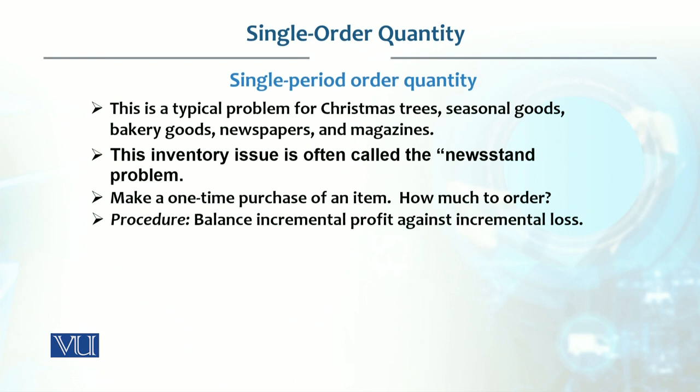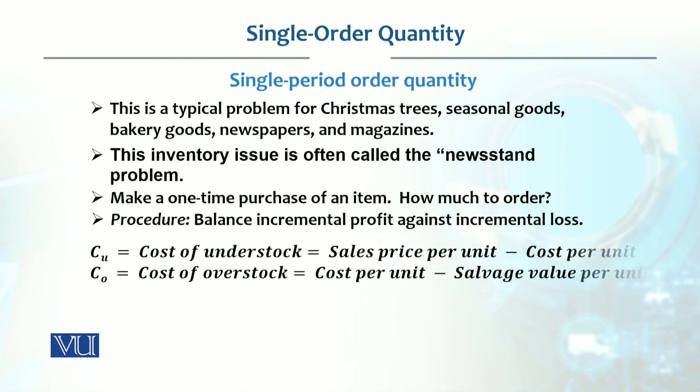Basically, the procedure involves two types of costs. One is what we call the cost of understock (Cu), which is based on incremental profit. The other is what we call the cost of overstock (Co), which is based on incremental loss. These two are balanced against each other.